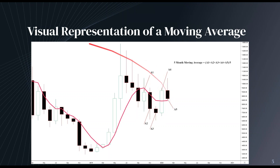Here's a diagram showing exactly what the formula was showing you before. Look at the close prices A1 through A5 — all of those get added up, then divided by the total number, which is five, and that gives us this input here. If we were to move this back one, then A4 would become our A5, A3 would become our A4, A2 would be A3, and we'd take the next close price as our A1. That would have plotted this point, and every single point before that.